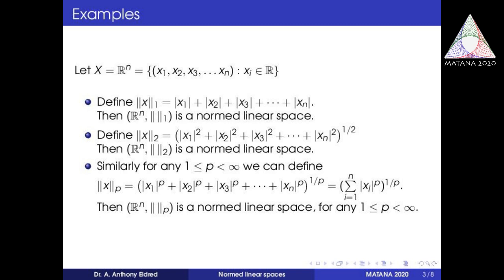R^n is a finite-dimensional vector space having a basis of n elements, where the standard basis is given by e1 equal to (1, 0, 0, ...), e2 equal to (0, 1, 0, ...), and so on. On R^n we can define many norms; for any p with 1 less than or equal to p less than infinity we can define the p-norm. These norms are called p-norms, where p can be 1, 2, or any real number between 1 and infinity.